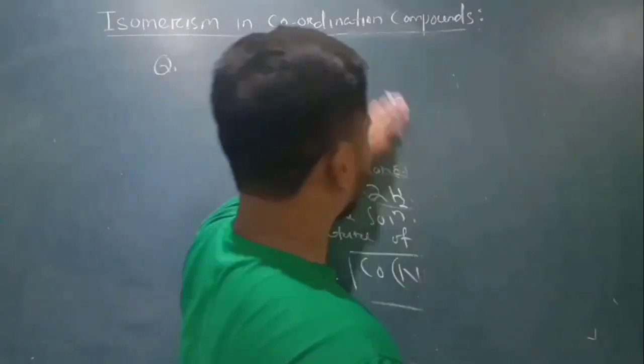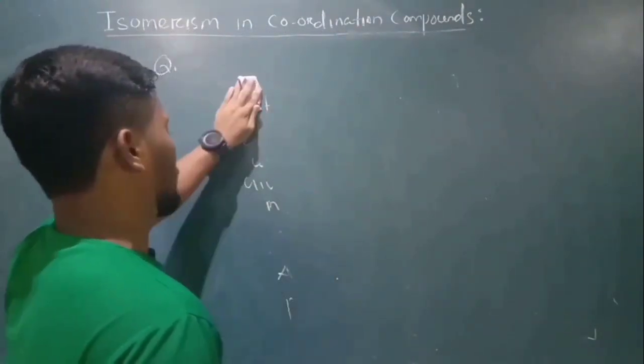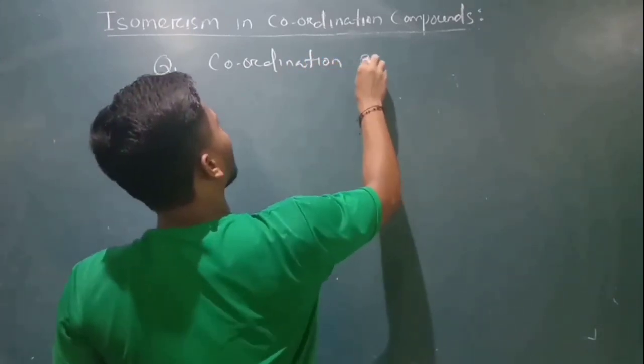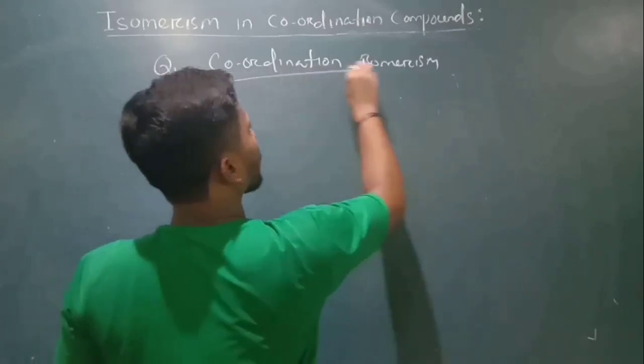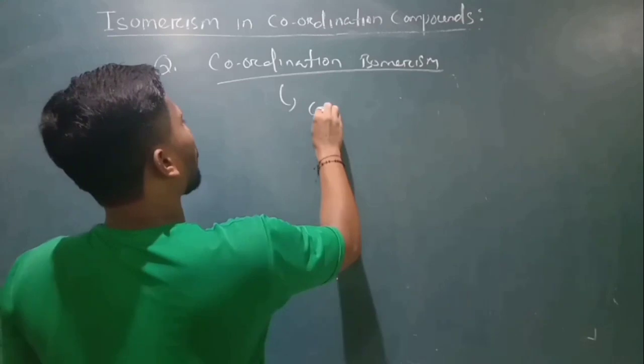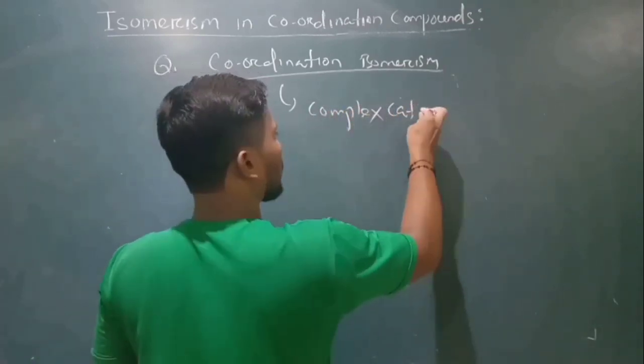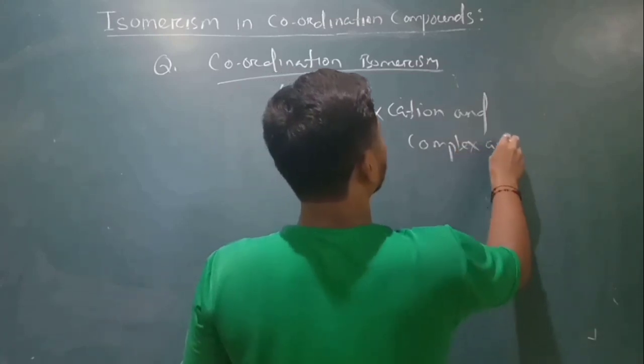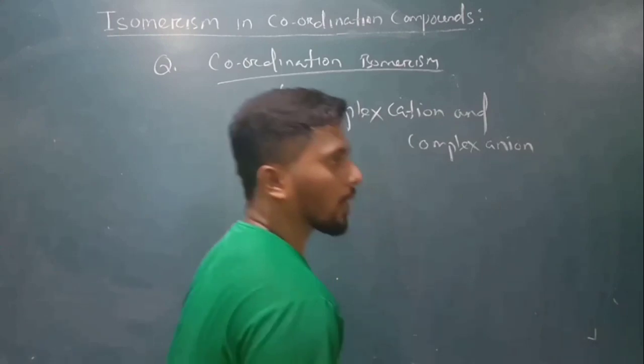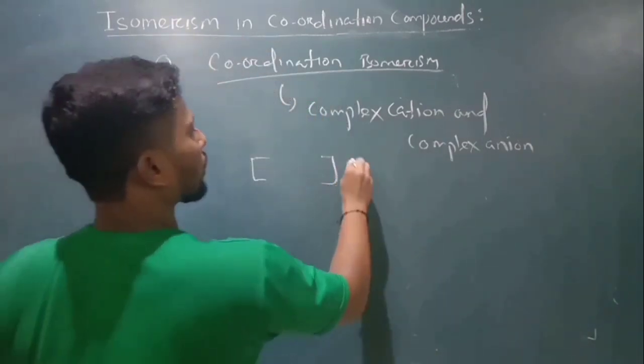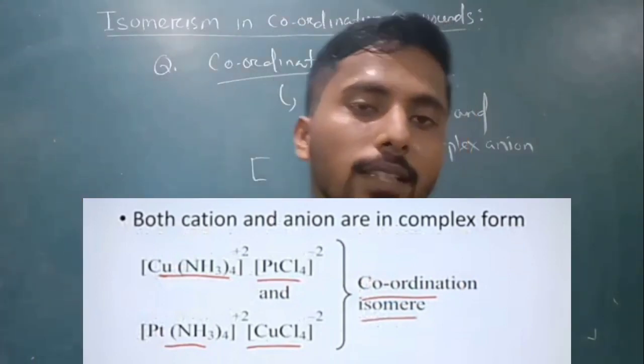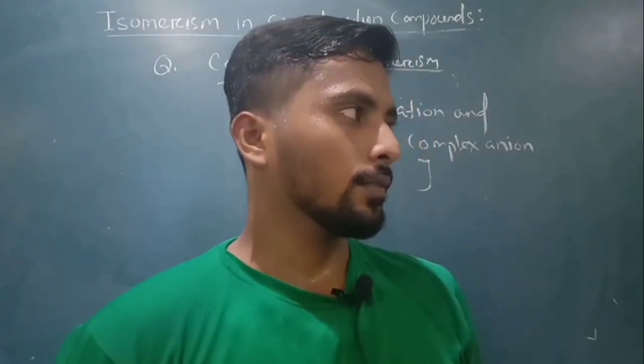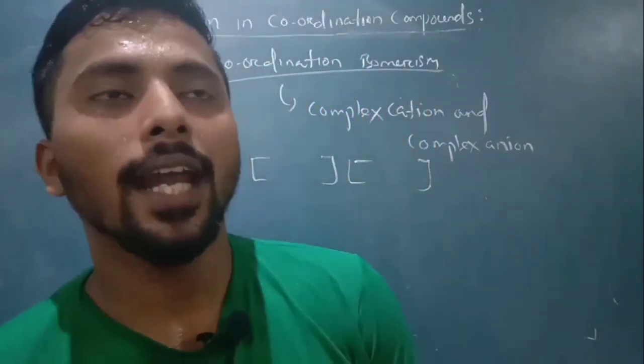The second case is coordination isomerism, a type of structural isomerism. Coordination isomerism involves complex cations and complex anions. These are coordination compounds having the same molecular formula but differ in the interchange of ligands.